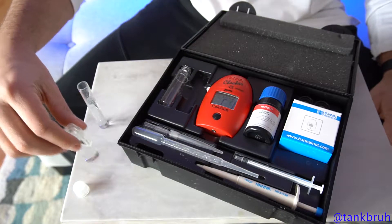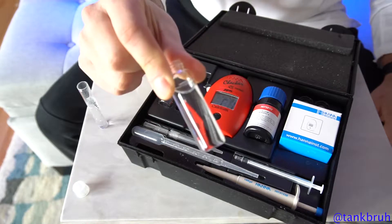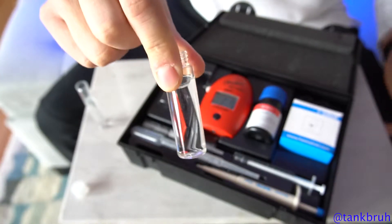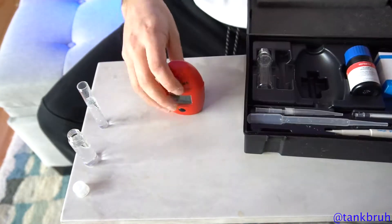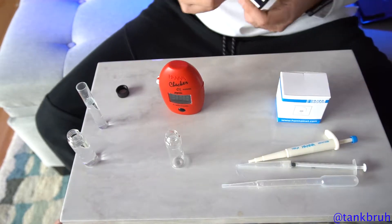Before we jump in how to use everything, you do need to have a sample of RO water on hand. You can get this from your local fish shop or you can simply brew some if you have a RODI system like I do. I'm gonna go ahead and take everything out of the box so it's a little bit easier to use.